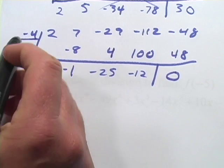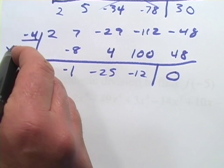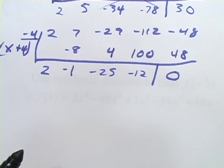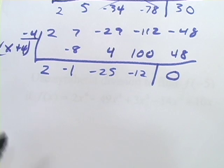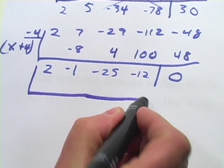So we've got negative 4 as a solution. That means x + 4 is a factor. Now, let's see what we can do next here. You know, I think I might try positive 4 on this.